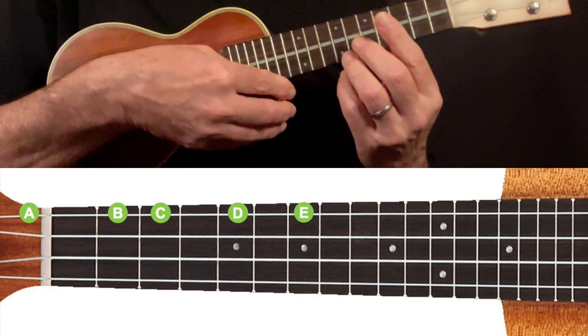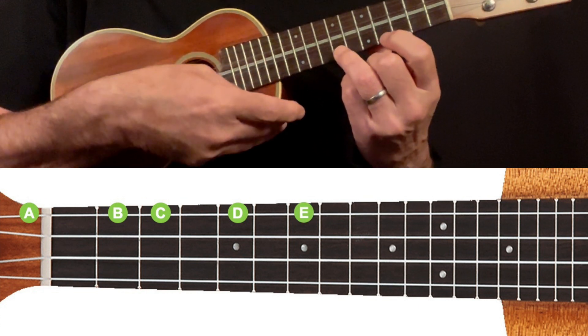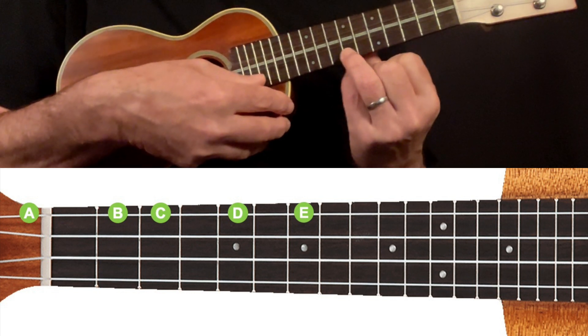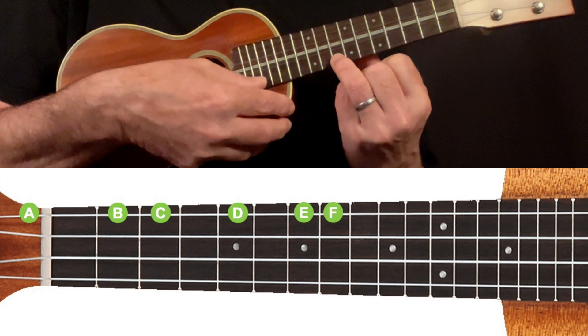Then, if we move up to the seventh fret and pluck the string, we have an E. Move up again, this time to the eighth fret, and we have an F note.